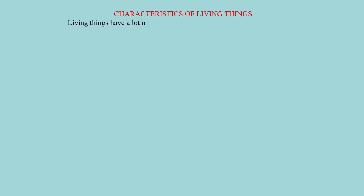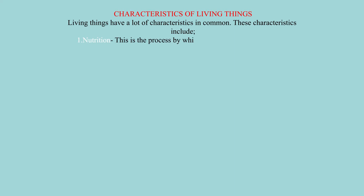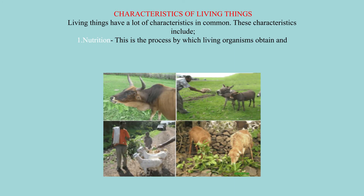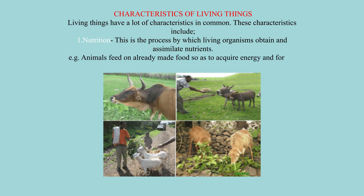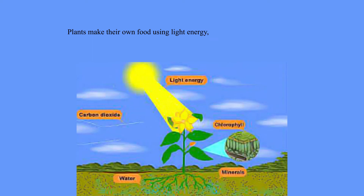Characteristics of living things: living things have a lot of characteristics in common. One: nutrition. This is the process by which living organisms obtain and assimilate nutrients. Animals feed on already-made food so as to acquire energy and for the purposes of growth. Plants make their own food using light energy, carbon dioxide, water, and chlorophyll through the process of photosynthesis.